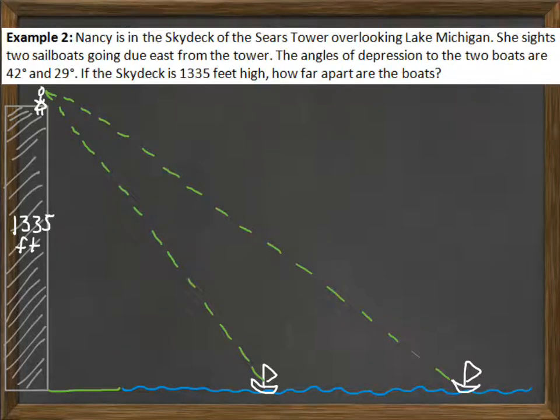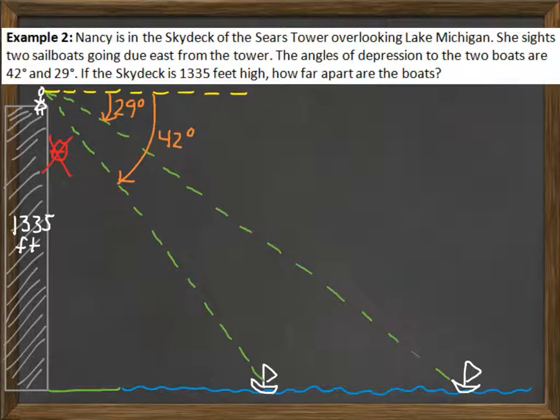Now we need to draw in the two angles of depression. The 42 degree angle and the 29 degree angle. I want to alert you to a common mistake. Don't do this. A common mistake is to put the angle of depression compared to the vertical line of the tower. But remember, the angle of depression is always compared to a horizontal line. So, the 29 degree angle is here. It's always compared to the person looking straight ahead. So the angle of depression to the very last boat is 29 degrees. Because that would create the smaller of the two angles. The angle of depression to the other boat is 42 degrees. Both of these angles are compared to the horizontal line of her looking straight ahead.